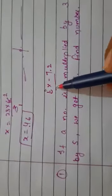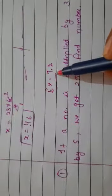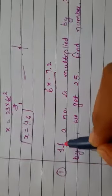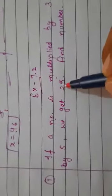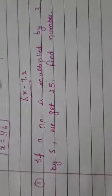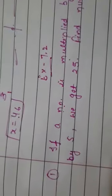Hello students, today we will start Exercise 7.2. The first question is: if a number is multiplied by 3 and decreased by 5, we get 25 — find the number. In Exercise 7.1 the equation was already given, but now we have to create the equation ourselves.